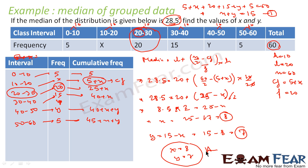To summarize: I identified the median class, then found the values of h, l, n, cf, and f, applied the formula median = l plus (n/2 minus cf) divided by f into h, and obtained the value of x. Using x plus y equals 15, I then found the value of y.